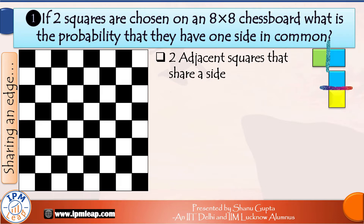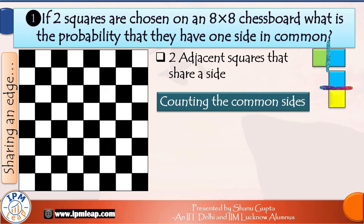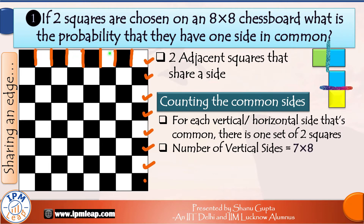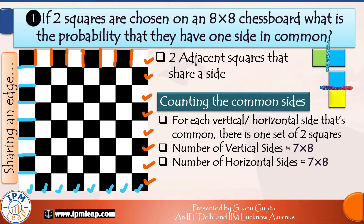In both cases, think about the common side that they share — it will be an internal line between the two squares; it cannot lie on the borders. So simply let's count the internal lines. The number of vertical sides will be 7 along any row, and there are 8 rows, so 7×8 which means 56 sides are vertical. And an equal number of sides — 56 sides — are horizontal. So total 56 plus 56, which is equal to 112 sides are shared.